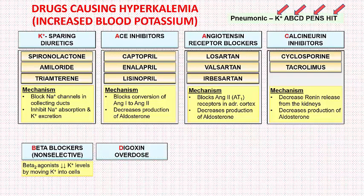Next is digoxin overdose. Digoxin inhibits sodium-potassium ATPase in the cardiac cell membrane, blocking sodium movement from inside to outside the cell and blocking potassium from outside to inside. Sodium concentration increases inside the cell and potassium concentration increases outside the cell. In acute or sudden digoxin toxicity, this sudden increase of potassium outside the cells may result in hyperkalemia.